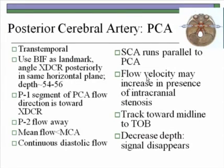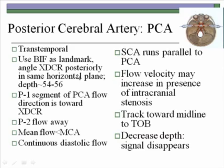To evaluate the posterior circulation — still in the temporal approach — angle slightly posterior. Increase the depth of the sample volume to where you would expect the midline, and that way you will get the top of the basilar. Because both PCAs originate from the top of the basilar, you will get another bidirectional signal. The mean flow velocity of the PCA is less than the MCA but still has continuous diastolic flow. The superior cerebellar artery runs parallel to the PCA, so you must differentiate between the two — the superior cerebellar artery has a more pulsatile characteristic. The flow velocity may increase in the presence of intracranial stenosis.